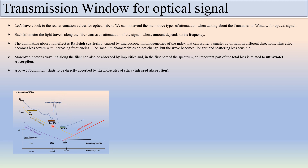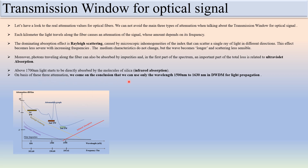There is a window where all three types of attenuation — Rayleigh scattering, ultraviolet absorption, and infrared absorption — are very low. This is the third window. Based on these three attenuation types, we conclude that we can only use wavelengths from 1500 nanometers to 1630 nanometers in DWDM for light propagation, because in this region all three types of attenuation are very low. Going beyond or below this frequency range causes attenuation to increase.